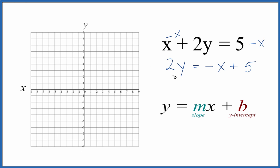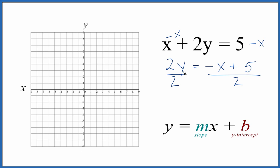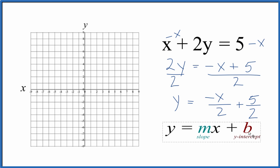Now we can divide both sides by 2 to get y by itself. 2 divided by 2 is 1, so we have 1y, which is just y. And then we have negative x over 2 plus 5 over 2. And we have this in slope-intercept form.